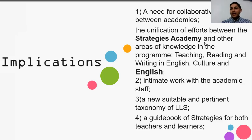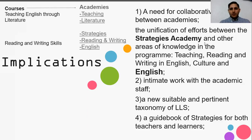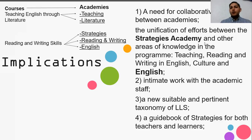Number four: a guidebook of strategies for both teachers and learners might emerge from the research, and that might be helpful for all actors in education, even for authorities. More implications include working collaboratively with the following courses: Teaching English through Literature and Reading and Writing Skills, and to merge the following courses: Teaching Content, Teaching Literature, Strategies, Psychology, Reading and Writing, and English.